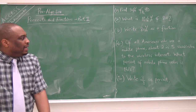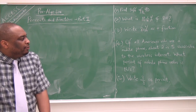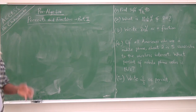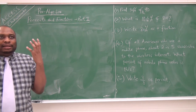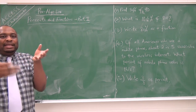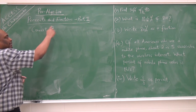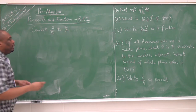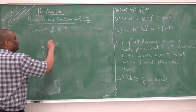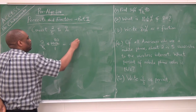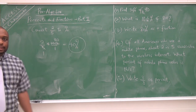Number 4: Of all Americans who use a mobile phone, about 2 in 5 subscribe to the wireless internet. What percent of mobile phone users is this? So 2 in 5 means 2 out of 5, which is the fraction 2/5. To find the percent, we multiply by 100 over 1. 5 divides into 5 to give 1, and 5 divides into 100 to give 20, making 2 times 20 = 40. The answer is 40%. We multiply by 100, simplify, then write percent after our answer.